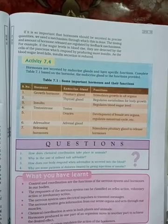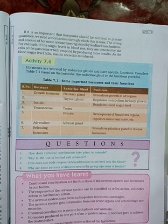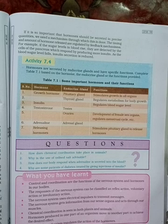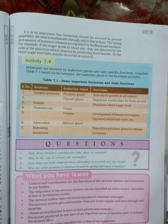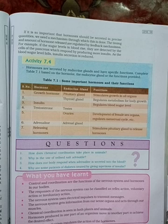If it is so important that hormones should be secreted in precise quantities, we need a mechanism through which this is done. The timing and amount of hormone released are regulated by a feedback mechanism. For example, if the sugar level in the blood rises, it is detected by the cells of the pancreas, which respond by producing more insulin.